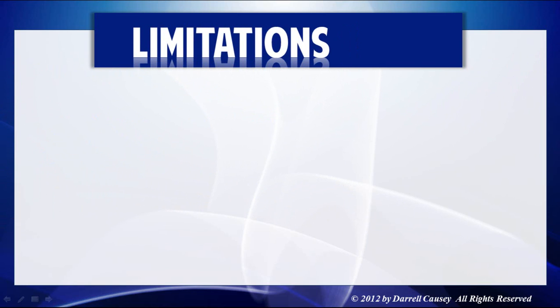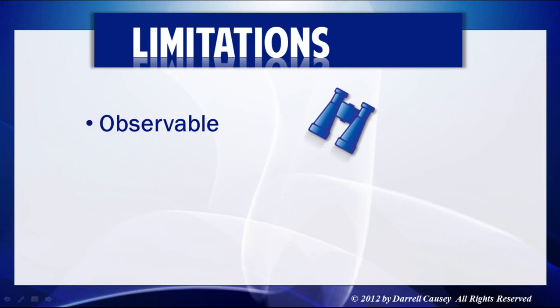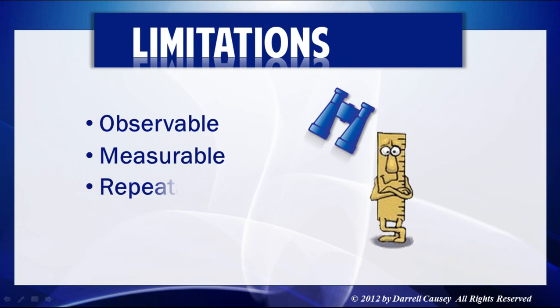But that brings us to the idea that science has limitations. Science should be observable, measurable, and repeatable. If it's not observable, measurable, and repeatable, it's not good science. What it really is, is philosophy — or the philosophy of science.